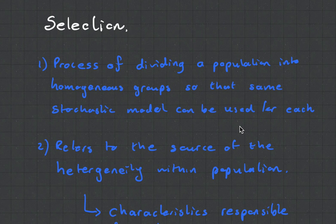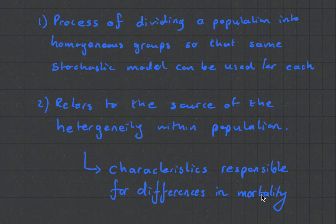In the previous video we spoke about mortality so check that one out if you haven't already. So, selection. What exactly is selection? Now, it's quite confusing because there are two different definitions for selection. The first one is selection is the process of dividing a population into homogenous groups so that the same stochastic model can be used for each one.